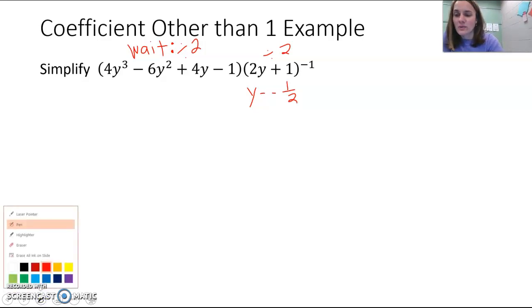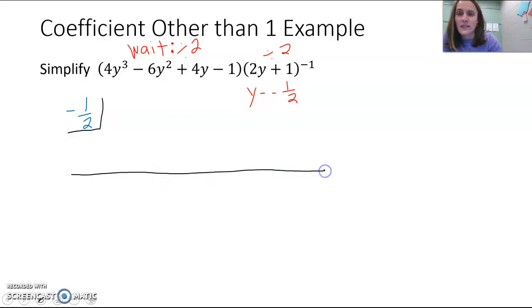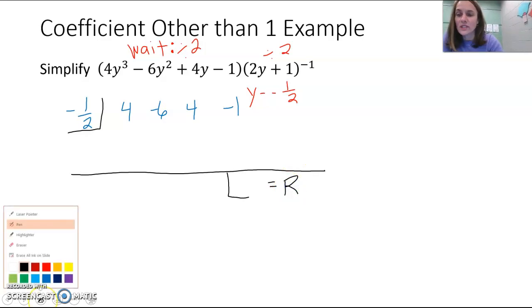So now, we're going to perform synthetic division, we're going to do negative 1 half out here on the side, and then we're going to put the rest of our numbers, so we have 4, and 4y cubed, negative 6y squared, 4y, and negative 1. And so we should get our remainder down here at the bottom in our last box. So let's do that. Let's begin by bringing our 4 down.